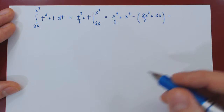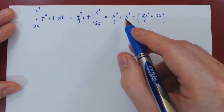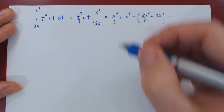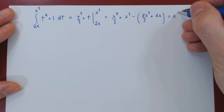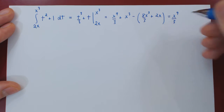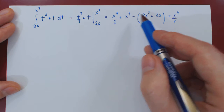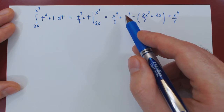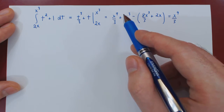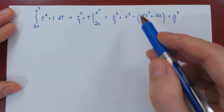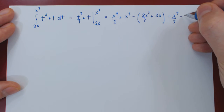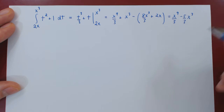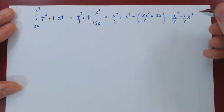We can now perform the subtraction and subtract the corresponding powers of x. The x⁹ term stays as x⁹/3. For the x³ power, thinking of 1 as 3/3, we get 3/3 − 8/3, which is −5/3. So we have minus 5/3 x³, and finally minus 2x.